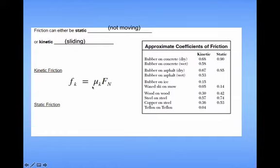The equation for kinetic friction is mu K Fn, the coefficient of kinetic friction times the normal force. The static friction isn't an equation, it's actually an inequality.